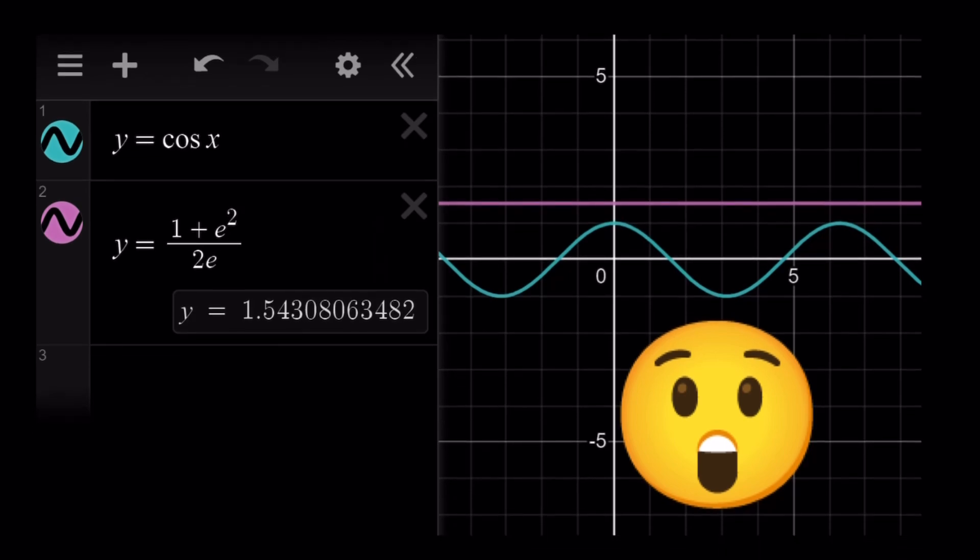Y equals cosine x, as you know, is like a sine wave with a different shift. And then the other one is a horizontal line whose y value is about 1.54. So one thing that's interesting here is they do not seem to intersect. And why is that happening? If you consider these two functions very carefully, you're going to understand why they do not intersect. So let's talk about that a little bit before we start solving this problem.